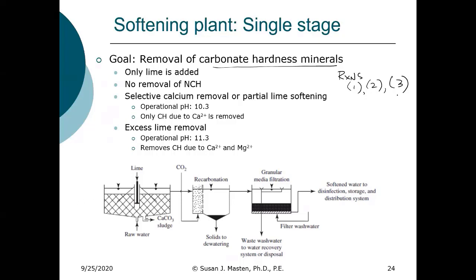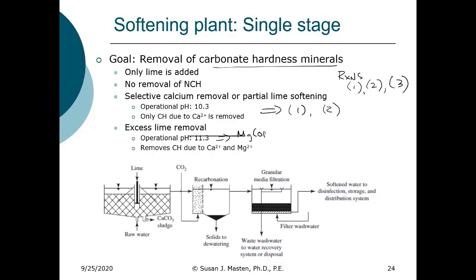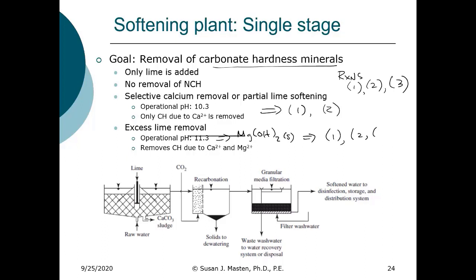If we only need calcium removal, the two reactions that are pertinent are reactions 1 and 2. If we need to remove magnesium, then we need to raise the pH to 11.3, and that is to precipitate the magnesium hydroxide. Because the solubility of magnesium carbonate is still quite high, we need to shift that equilibrium to form magnesium hydroxide. Here we're looking at reactions 1, 2, and 3.